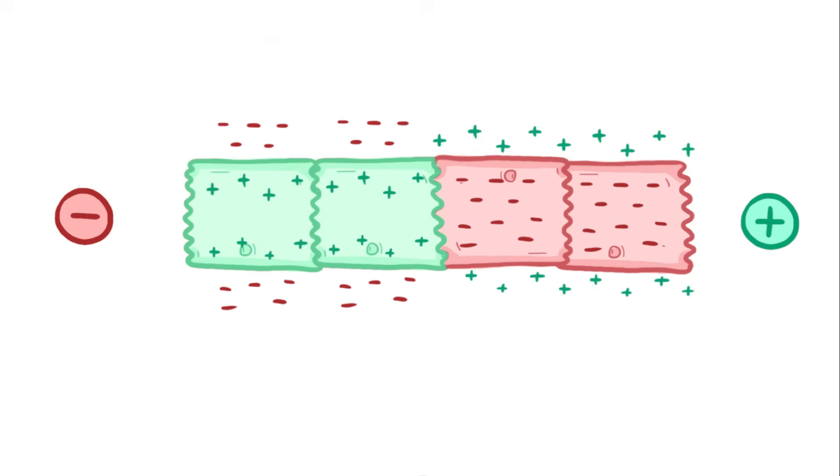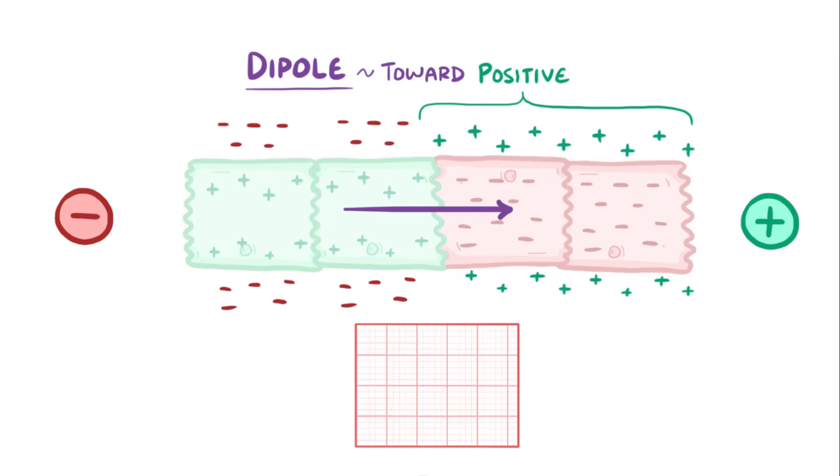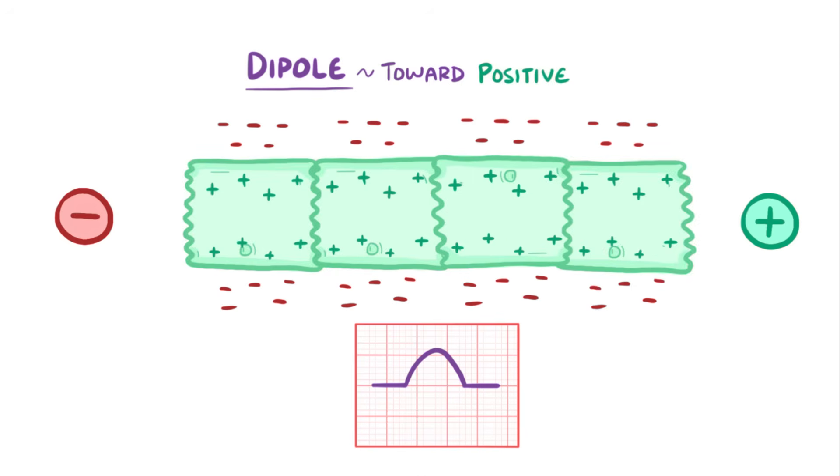You can think of the charge difference as being a dipole, because there are two electric poles. And we can draw this dipole out as an arrow, or vector, pointing towards the positive charge. And remember, the electrodes detect charge on the outside of the cell, so this points toward where the positive charge is outside the cell. Now if there's a dipole vector pointing toward the positive electrode, then the ECG tracing shows it as a positive deflection. The bigger the dipole, the bigger the deflection. If we unpause this, then everything becomes depolarized, and since there's no difference in charge now, there's no dipole, and so there's no deflection.